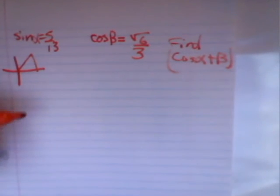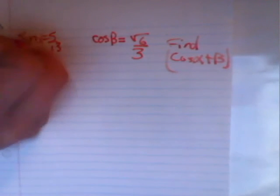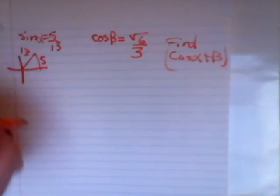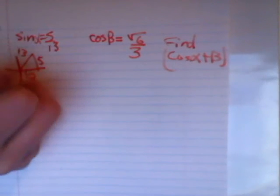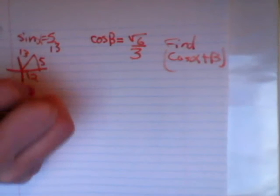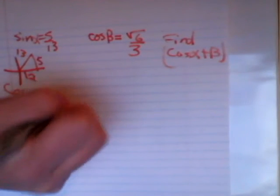We have sine of alpha equals 5 over 13. So we know that the opposite side is 5 and the hypotenuse is 13, and the adjacent side is going to be 12. So we know that cosine of alpha equals 12 over 13.